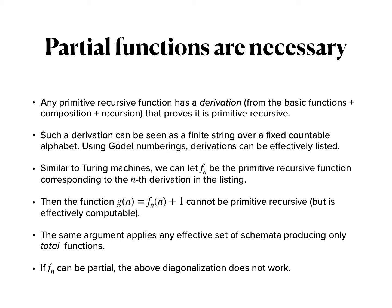Just like we did for proofs, we can view such a derivation as a finite string over a fixed countable alphabet. Then we can apply the whole machinery of Gödel numberings to it, similar to what we did with Turing machines. Therefore, we can effectively number or list all derivations of primitive recursive functions.